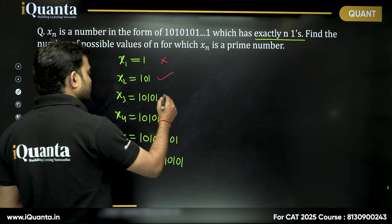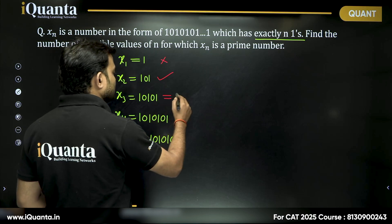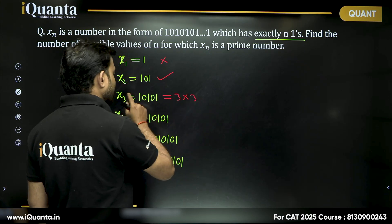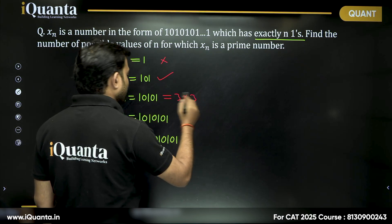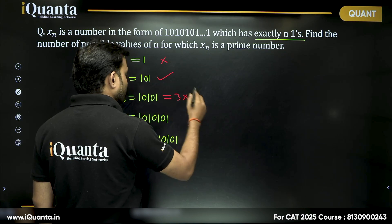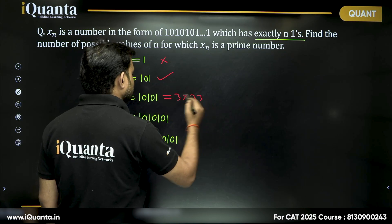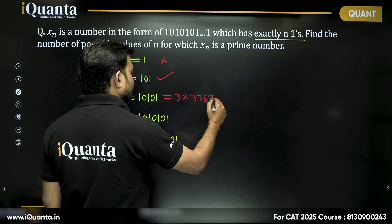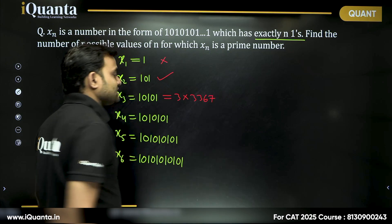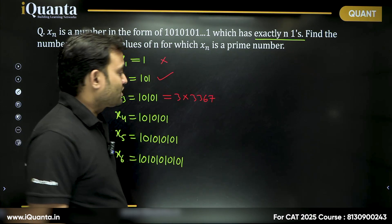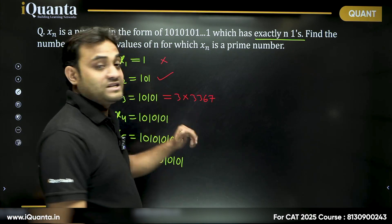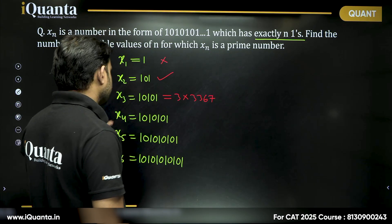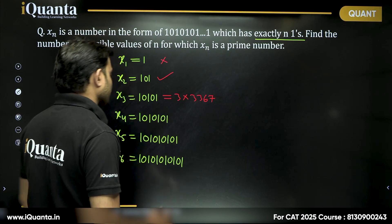10101 can be written as 3 times 3367, so this number is definitely not a prime number. Now, what can we say about this number generally?